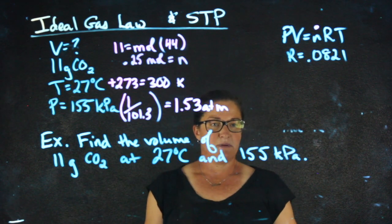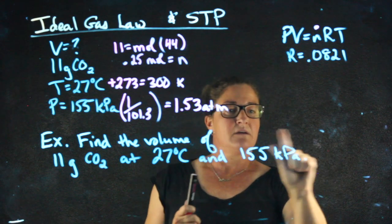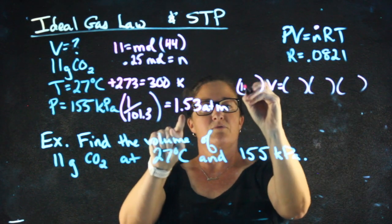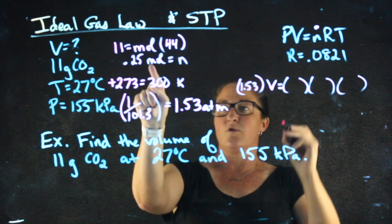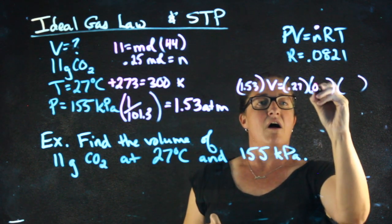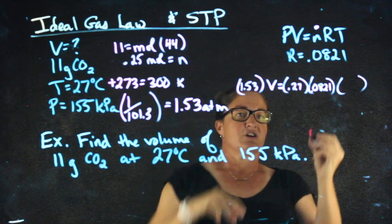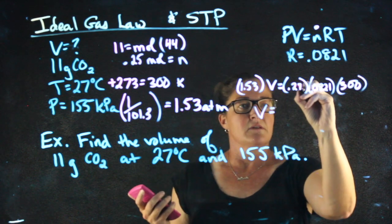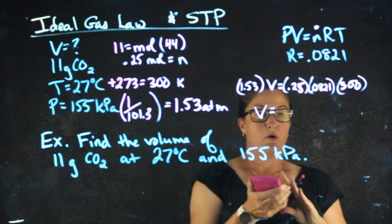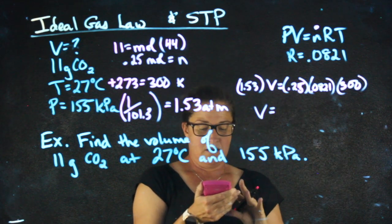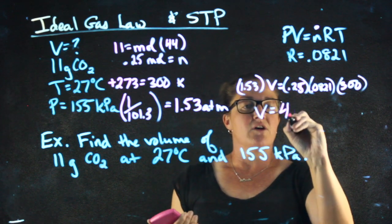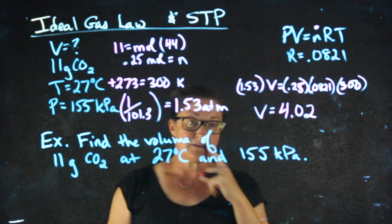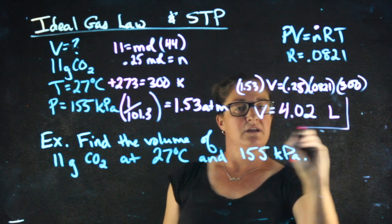Now I know everything I need to know to plug into PV equals NRT and to solve for volume. PVNRT, pressure 1.53, V is what I'm looking for, moles are 0.25, R is 0.0821 always, temperature is 300. So 0.25 times 0.0821 times 300 divided by 1.53 gives me a volume of 4.02. And in this formula, volume always has to be in liters. So if I'm solving for volume, it comes out in liters.